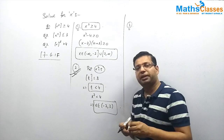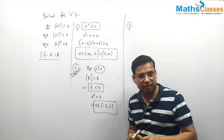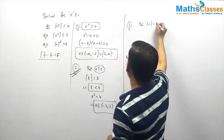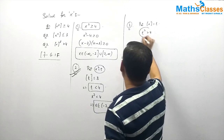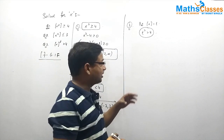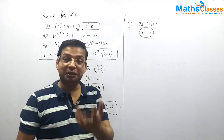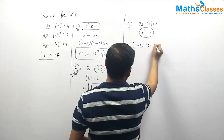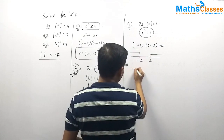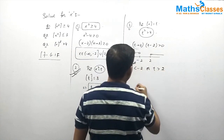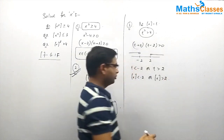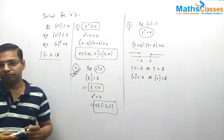There is a difference between the first two questions and the third one. In questions 1 and 2, x² was inside the greatest integer function. Here, the greatest integer of x is squared — so (⌊x⌋)² > 4. We put ⌊x⌋ = t, so t² > 4. Solving: (t + 2)(t - 2) > 0, giving t < -2 or t > 2, i.e., ⌊x⌋ < -2 or ⌊x⌋ > 2.